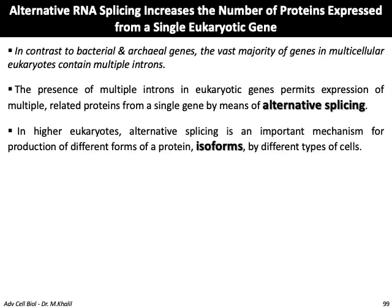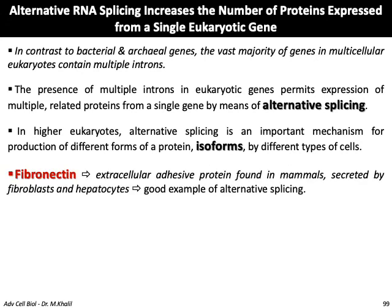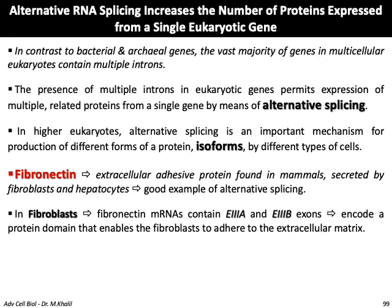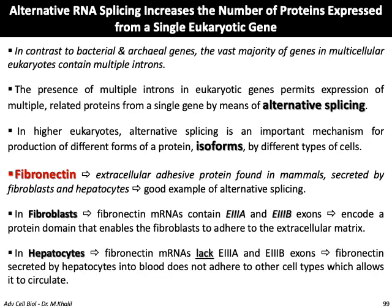In higher eukaryotes, alternative splicing is an important mechanism for producing different forms of a protein — called isoforms — in different types of cells. A good example is fibronectin, an extracellular adhesive protein found in mammals and secreted by fibroblasts and hepatocytes. In fibroblasts, fibronectin mRNA contains two exons called E3A and E3B, which encode a protein domain that enables fibroblasts to adhere to the extracellular matrix. In hepatocytes, the fibronectin mRNA lacks these two exons, so the fibronectin secreted into the blood by hepatocytes does not adhere to other cell types, allowing it to circulate.